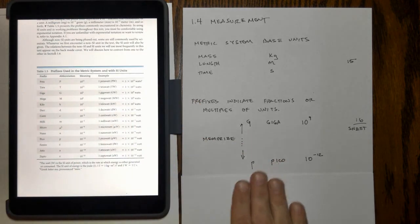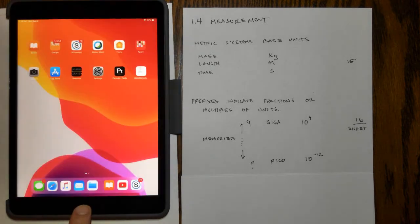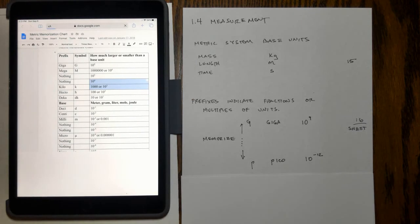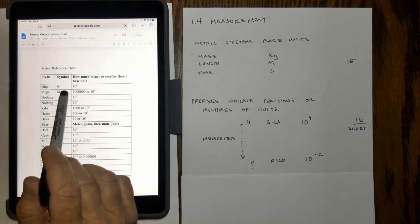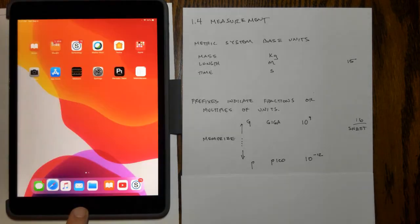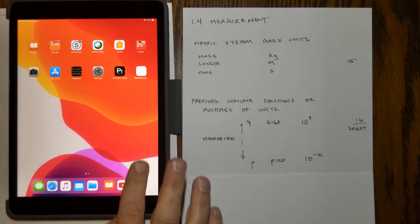This list that you should memorize is also available for you on Schoology, and I have it as a one-tap piece right here. These are the prefixes, symbols, and how much larger or smaller they are than a base unit, listed in a document that's available to you in Schoology right on one of the front pages.